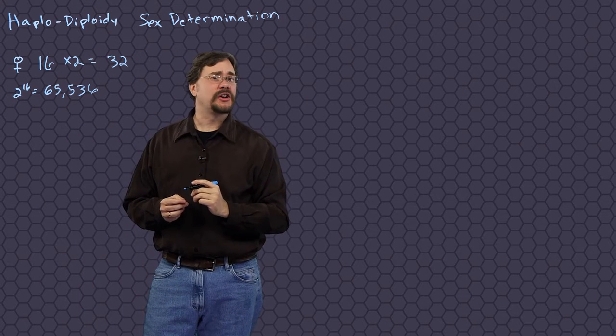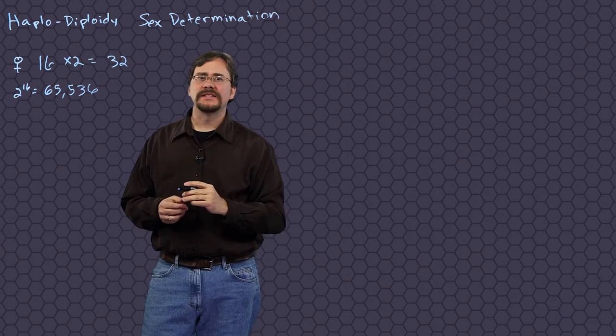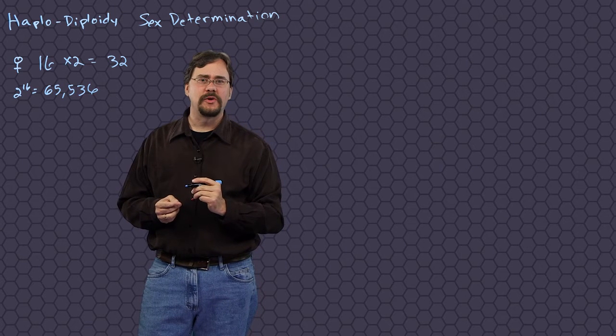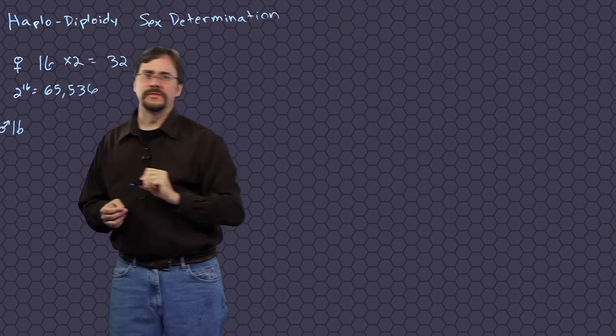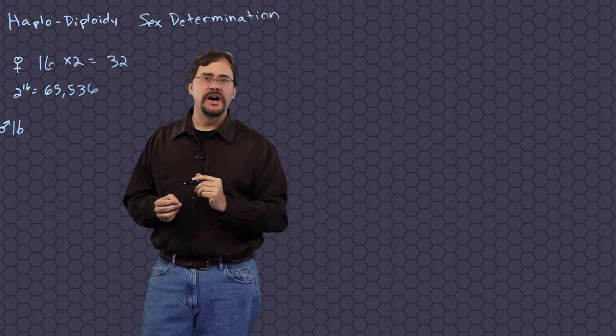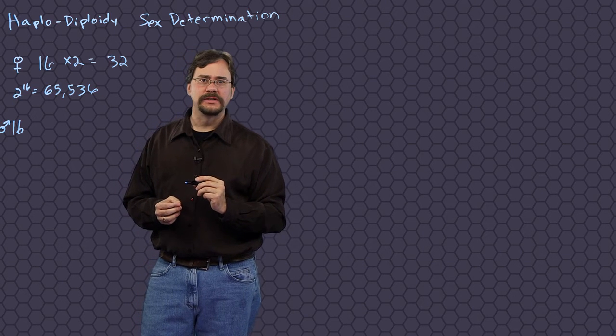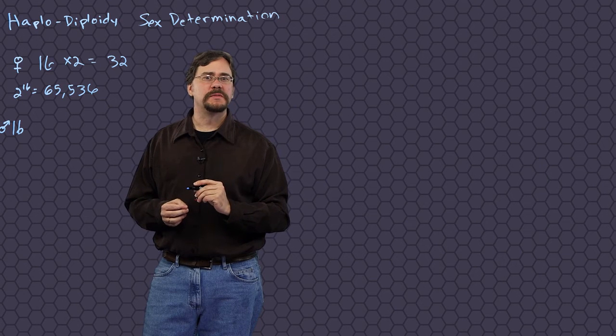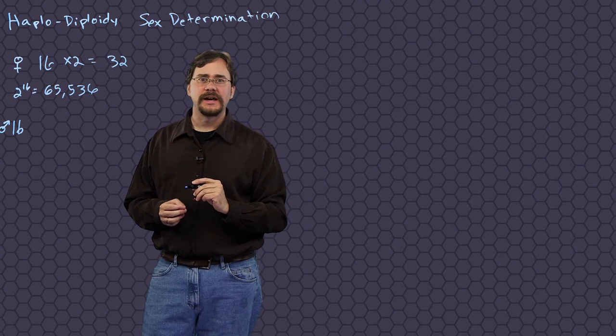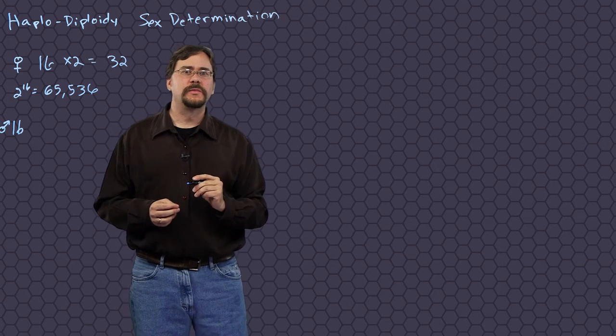This means that each egg a queen bee produces possesses any one of these possible unique combinations of chromosomes. Male honeybees, by contrast, have 16 chromosomes. They only have one copy of each gene because they develop from an unfertilized egg — this is called a haploid condition. All of their DNA comes from their mother. They don't have a father, but they do have a grandfather because their mother had a father. Drones produce millions of identical gametes; their sperm cells form without undergoing reduction division.